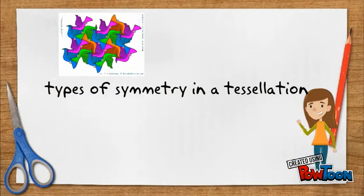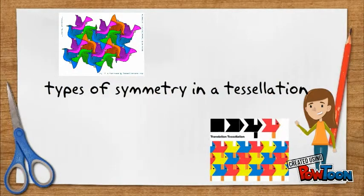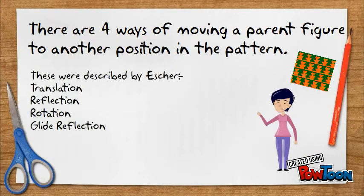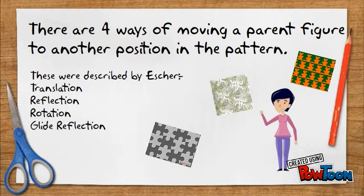Types of Symmetry in a Tessellation. There are four ways of moving a parent figure to another position in the pattern: Translation, Reflection, Rotation, and Glide Reflection.